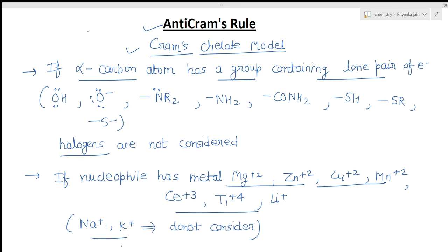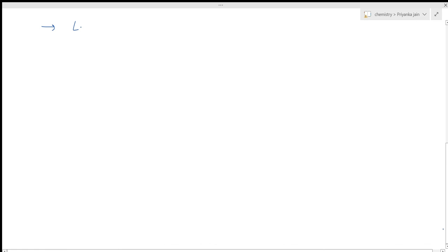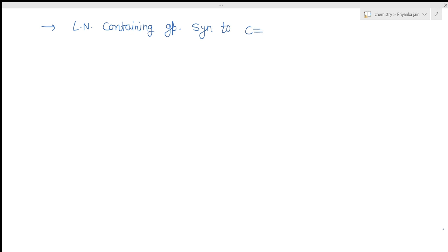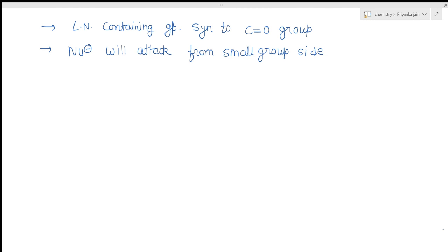When applying anti-Cram's rule, you must place the lone-pair-containing group syn to the carbonyl group (C=O). Then, the nucleophile attacks from the small group side. For example, consider a compound with a CH3-C=O group and an OH substituent at the alpha carbon with an ethyl group and H, treated with Zn(BH4)2 (a reducing agent similar to NaBH4, where the nucleophile is H⁻).